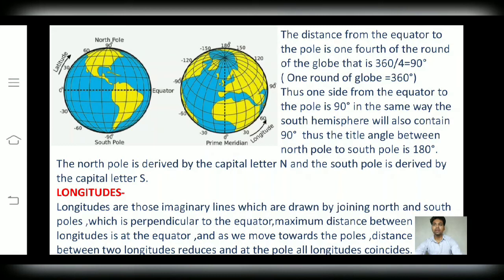Friends, the distance between two longitudes is maximum at the equator and minimum at the poles. From the equator to the poles, as we move, we see that the distance between two longitudes reduces, and at the poles, all longitudinal lines coincide.